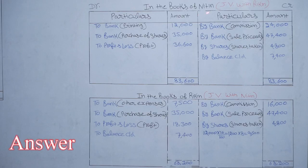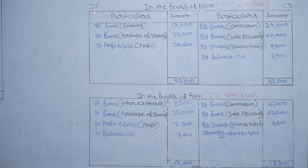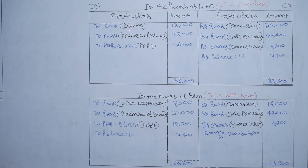In the books of Nitin — Joint Venture with Rikin. In the books of Rikin — Joint Venture with Nitin. Debit and credit columns with particulars and amounts. All expenses will come on the debit side and all receipts and income will come on the credit side. Nitin spent Rs 12,000 for printing and advertising: To Bank Account — Printing Rs 12,000.